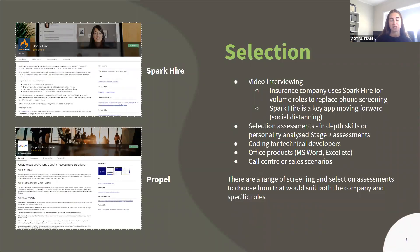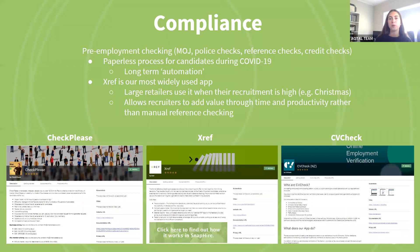A third stage where you may want to assess candidates is at the compliance stage, which relates to pre-employment checking — such as reference checks, MOJ checks, police checks, or credit checks. These apps can be especially useful during COVID-19 to reduce the need for paper and physical contact. We have a range of background checking apps including Check Please, Xref, and CV Check, which promote a paperless and automated background checking process. Xref, for example, is our most widely used app — during high-volume periods like Christmas, one of our largest retailers uses Xref to allow recruiters to add value through time and productivity rather than manual reference checking.